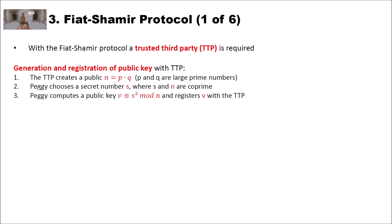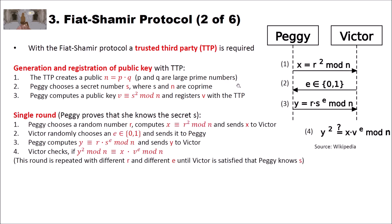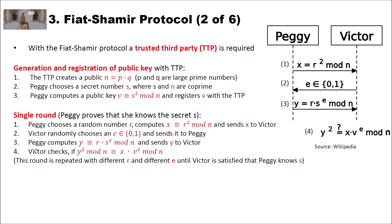Then Peggy, who wants to register her key, chooses a secret number s, where s and n are co-prime. She then computes the square of s modulo n and registers this number v with the trusted third party. Her public key is v and her secret key is s. Now Peggy wants to prove to Victor that she knows the secret s. As with the cave example, they have to repeat this method until the probability that Peggy by chance gave the correct numbers is minimal.